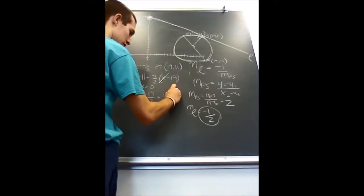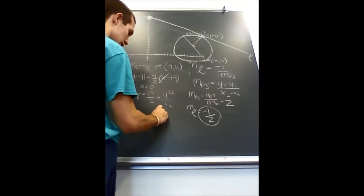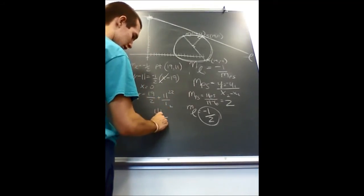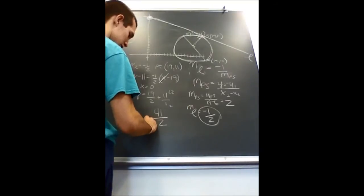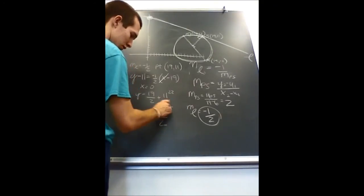So you need to get a common denominator so that you can add, and you get the y-intercept to equal 41 over 2.